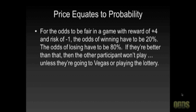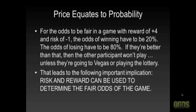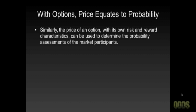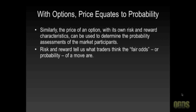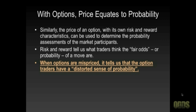For the odds to be fair in a game with a reward of plus 4 and a risk of minus 1, the odds of winning have to be 20% — not 10%, they have to be 20%. The odds of losing have to be 80%. And if they're better than that, then the other participant won't play, unless they're going to Vegas or playing the lottery. This leads to an important implication: risk and reward can be used to determine the fair odds of the game. Similarly, the price of an option, with its own risk and reward characteristics, can be used to determine the probability assessments of the market participants. Risk and reward tell us what traders think the fair odds or probability of a move are.